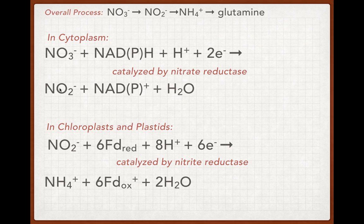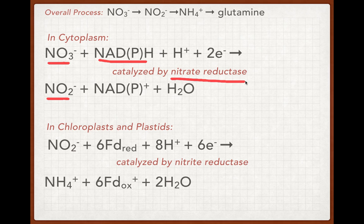In the first step, nitrate is converted to nitrite. This occurs in the cytoplasm with reducing power from NADH or NADPH, and it is catalyzed by the enzyme nitrate reductase.